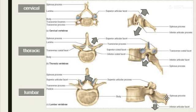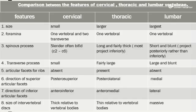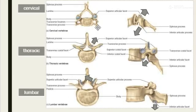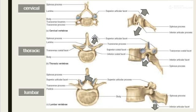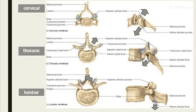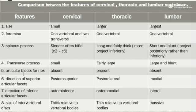The transverse process of cervical is very small, thoracic is fairly large, and lumbar is large and blunt. Here we can see the transverse process is very small for cervical, fairly large for thoracic, and very large for lumbar.